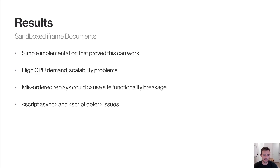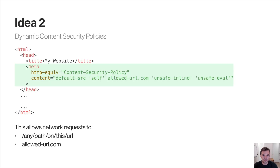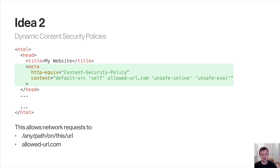Our second idea was to generate dynamic Content Security Policies, or CSPs. CSPs are a browser-level feature that provides total control over network requests. Using a CSP, the website owner can specify an allow list of URLs the user agent is allowed to connect to. CSPs are typically defined by the web server through an HTTP response header, but they can also be set through meta tags — and these meta tags can be generated at runtime. Here we can see a dynamically generated CSP meta tag produced by analyzing a list of domains.